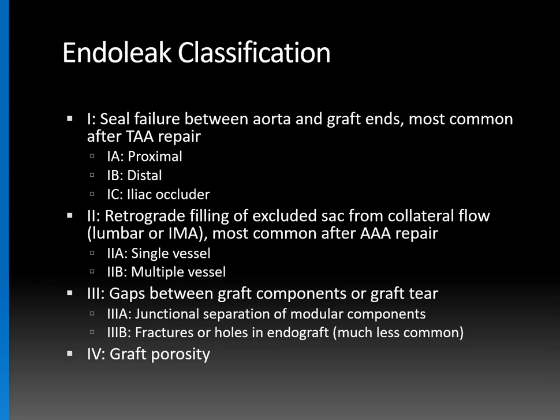Type 4 endoleak is due to porosity of the graft. Type 5, known as endotension, is when the aneurysm sac increases in size without an identifiable cause — some argue whether this type even exists, and these are probably slow-flow type 2 or type 3 endoleaks not seen on routine imaging.